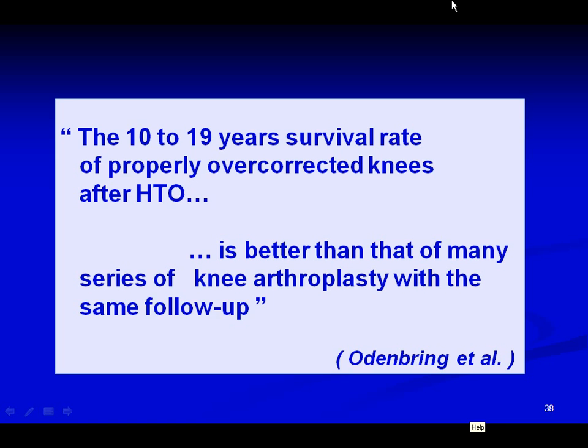Regarding how many degrees of hypercorrection to use: Guterrier in France proposes 3 to 6 degrees; other authors suggest 3 to 6, or 3 to 12 in some papers; and Vau proposes 10 degrees. In our series we use only 5 degrees mechanical axis. When discussing degrees of correction, one must always clarify whether it is mechanical or anatomical — remember the drawings shown by Hatem.